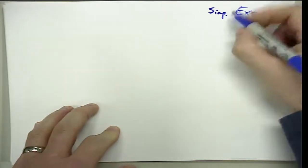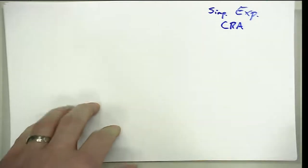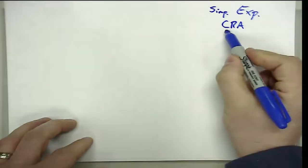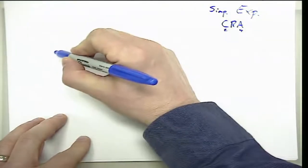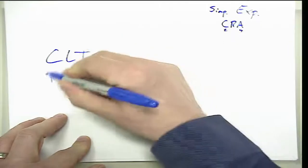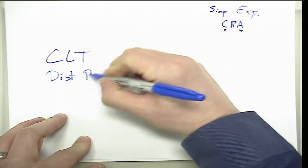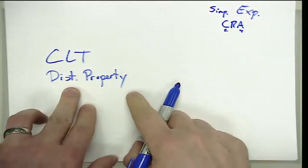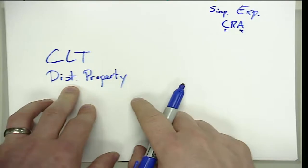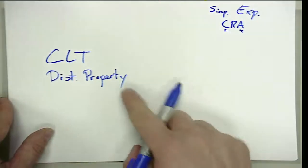In this video we're going to talk about simplifying expressions in relation to a CRA sequence of instruction. Specifically we're going to be looking at the concrete and how that ties up to the abstract. When we think about simplification of expressions, we're really talking about two things: combining like terms and the distributive property. Those are the two that we're going to take a look at.